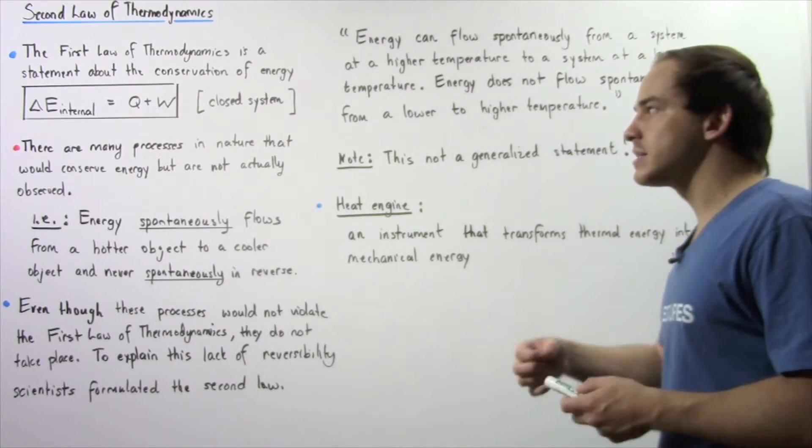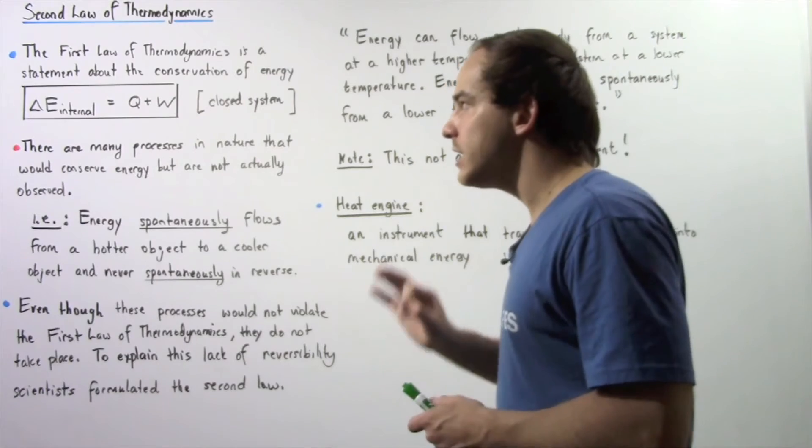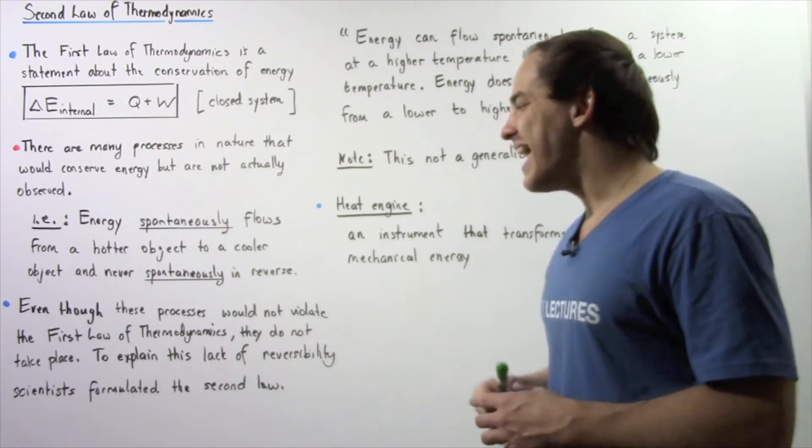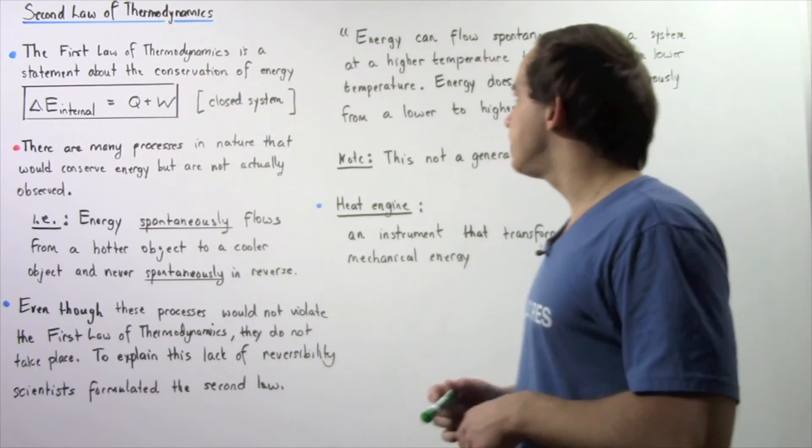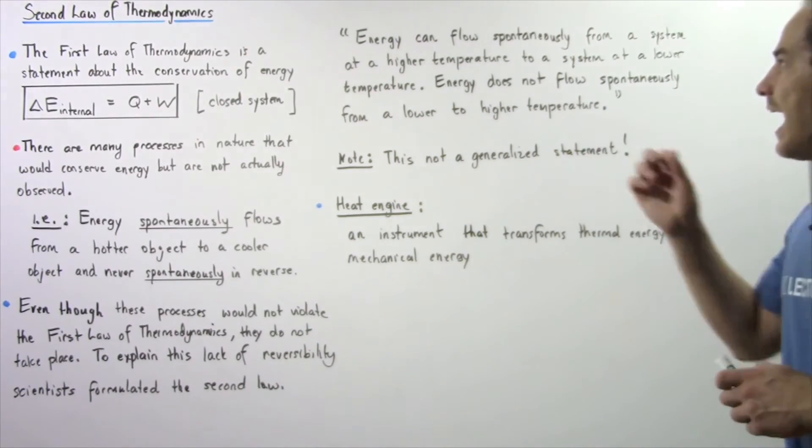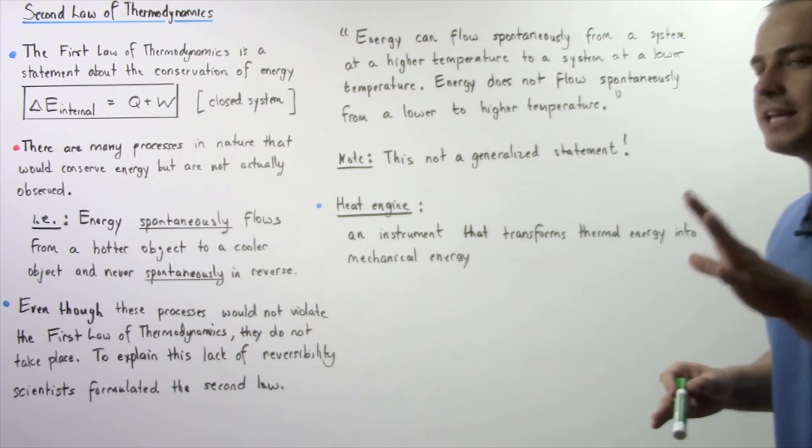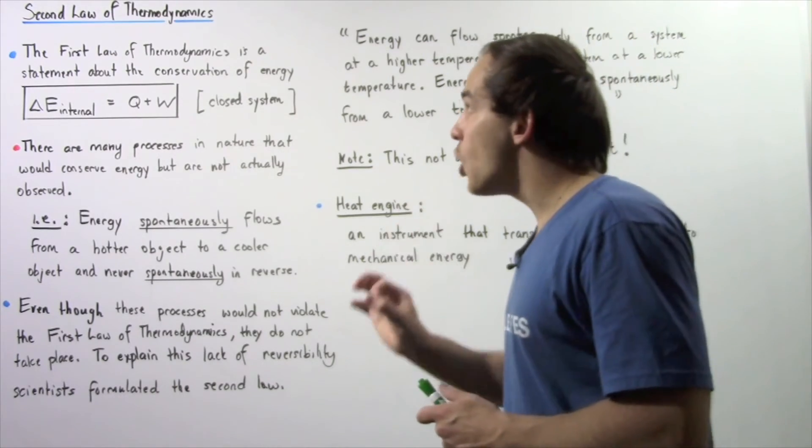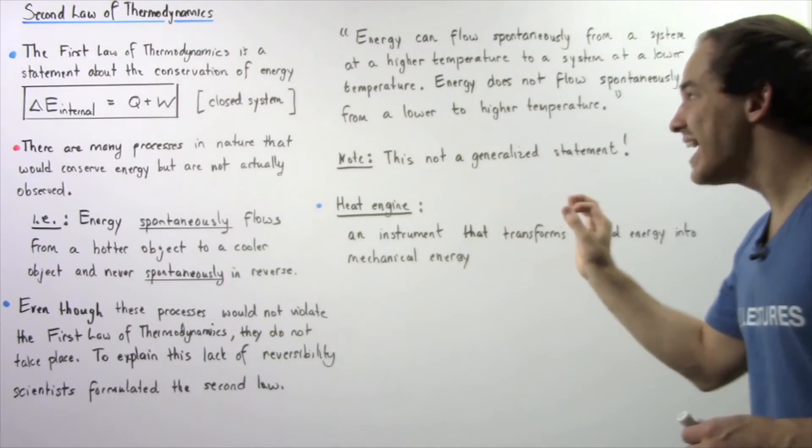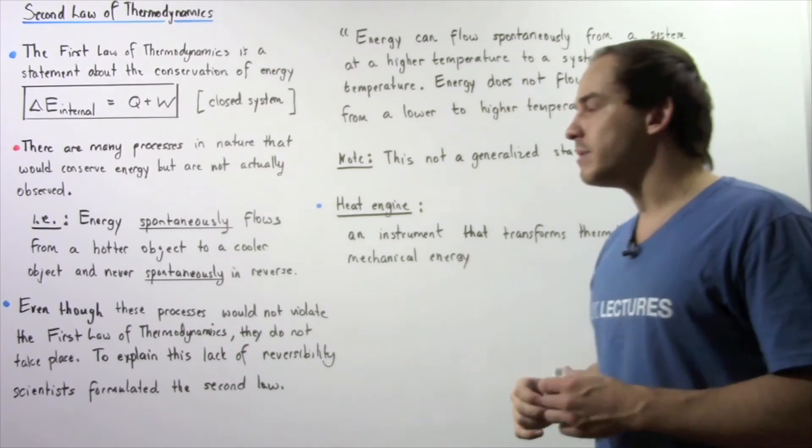And to explain this lack of reversibility of certain processes in nature, scientists formulated the second law of thermodynamics, and it states the following. Energy can flow spontaneously without the input of outside work from a system at a higher temperature to a system at a lower temperature. Energy does not flow spontaneously from a lower temperature to a higher temperature. Note that this is not a generalized version of the statement.